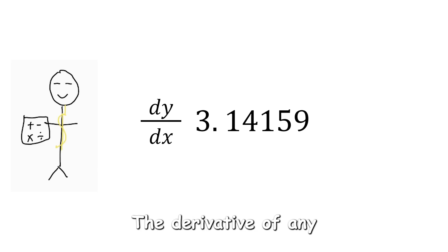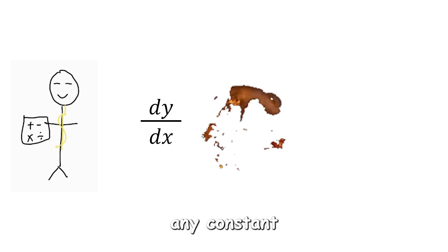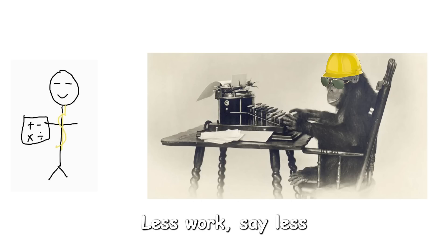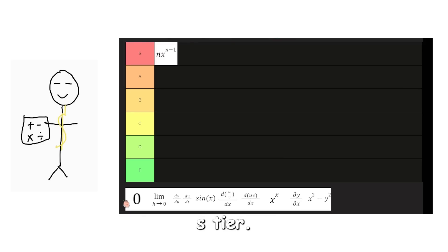Constant rule. The derivative of any constant is zero, so you can just ignore any constant when differentiating a function. Less work, say less. S tier.